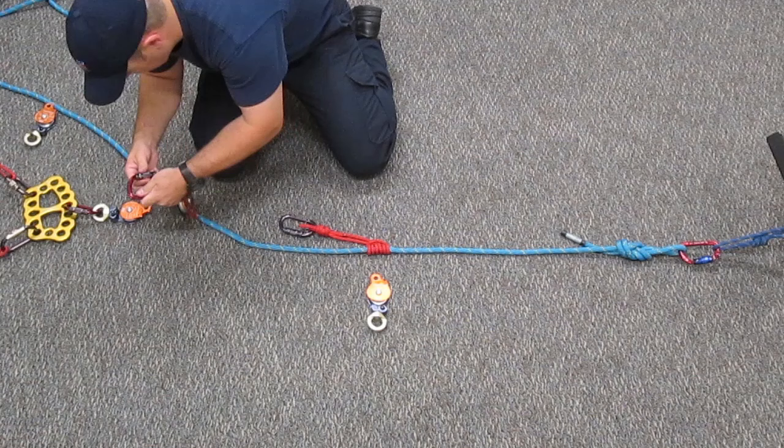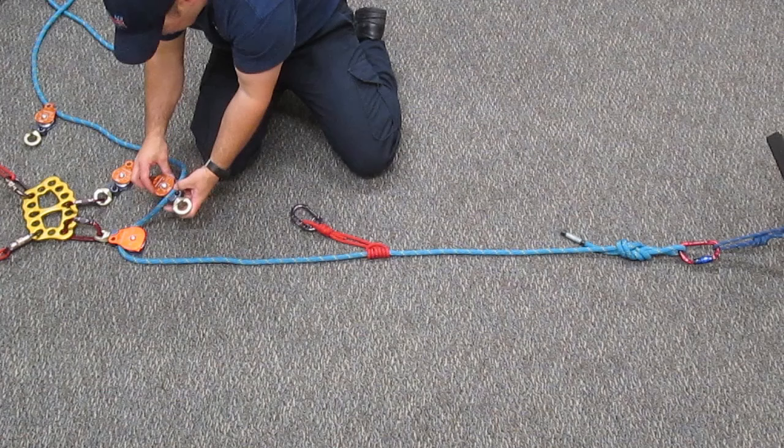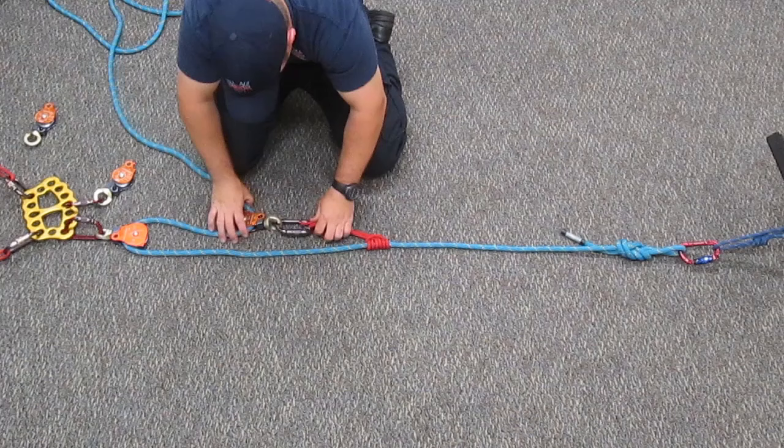We can take our Prusik minding pulley as our progress capture, bring the rope through, clip it in, and our traveling pulley clip it in and attach it into our rope grab.